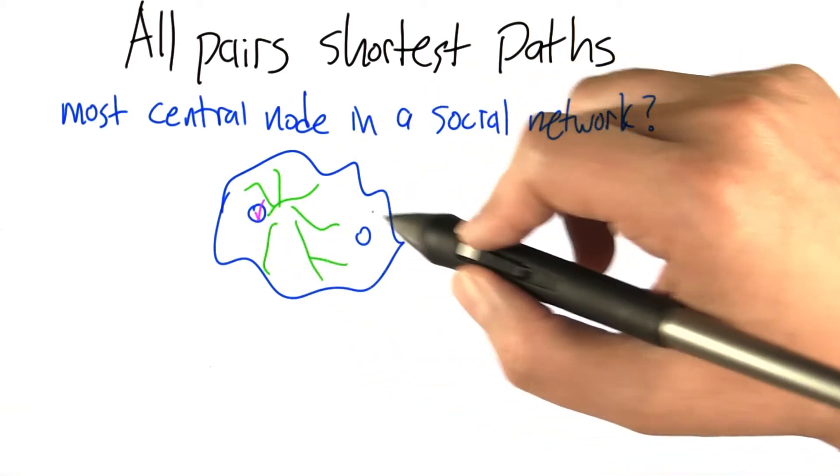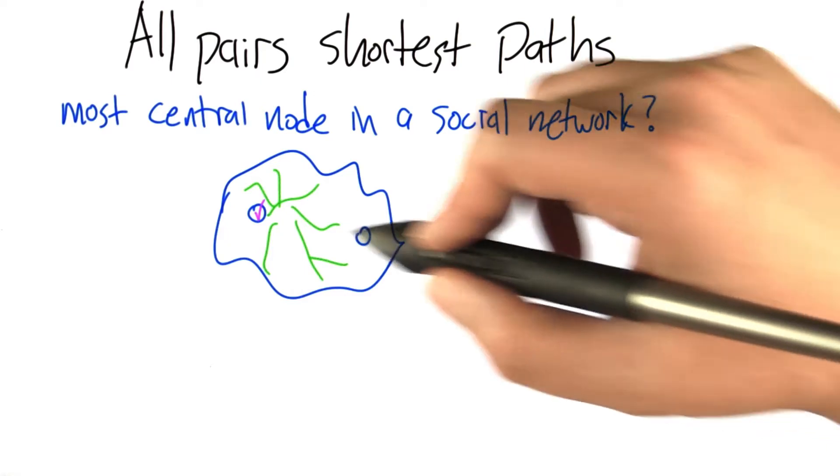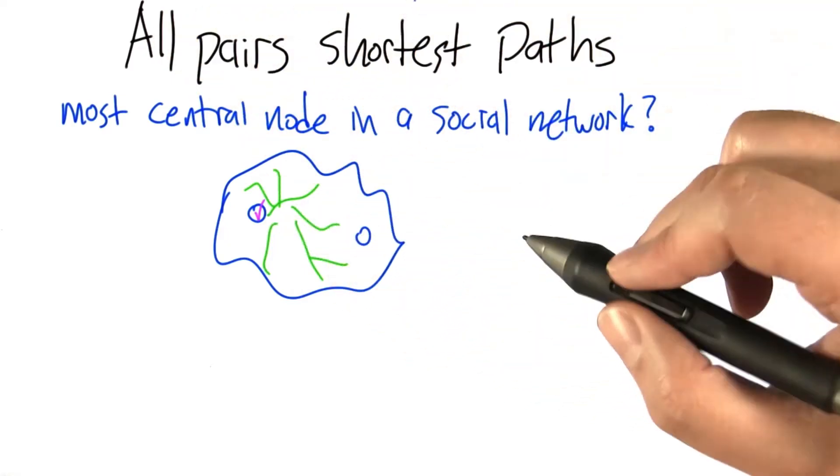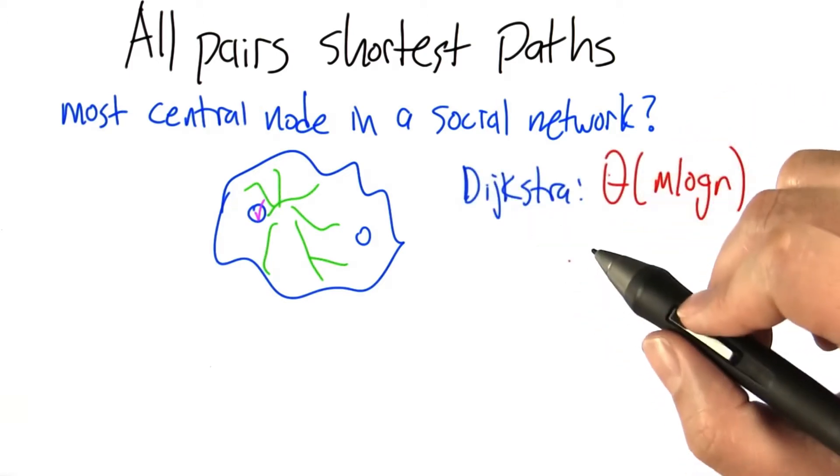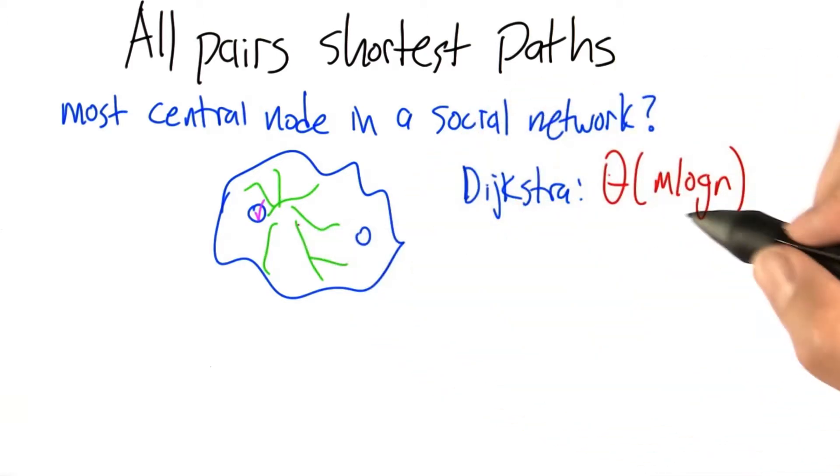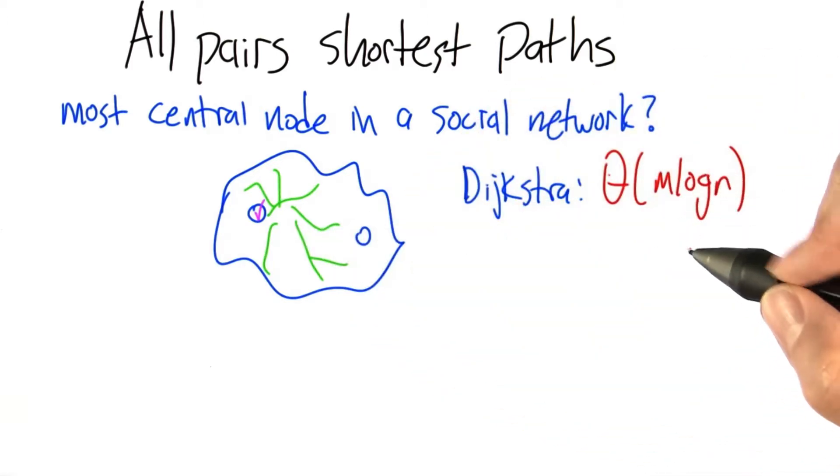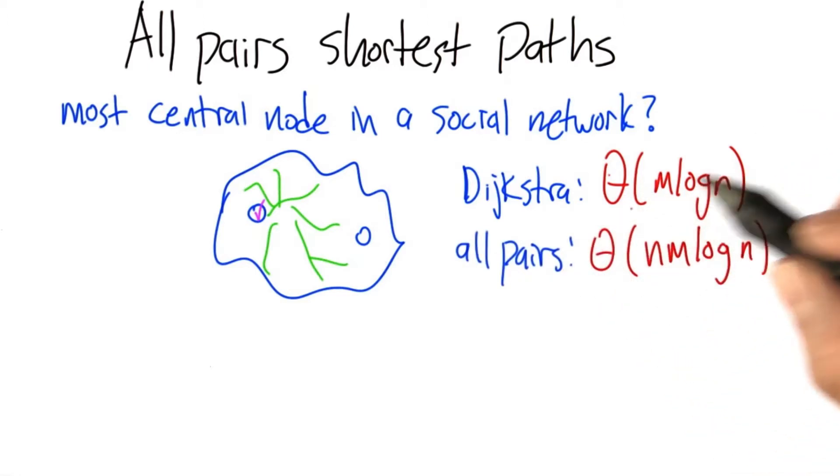Really, what we want to know is the shortest distance between any pair of nodes. All pairs, we would like to know the distance, the length of the shortest path. Now, given that we can execute a shortest path from any given node in m log n time, we can just repeat that algorithm, one at a time for each node.